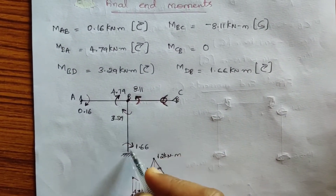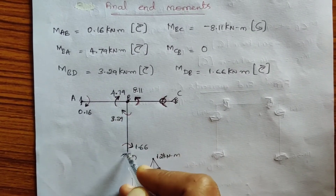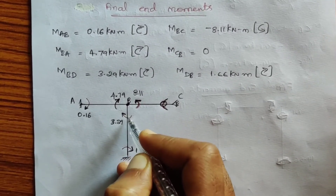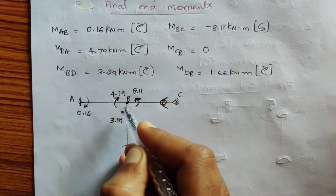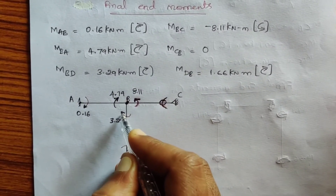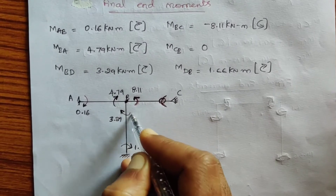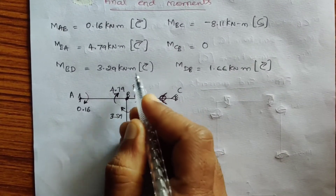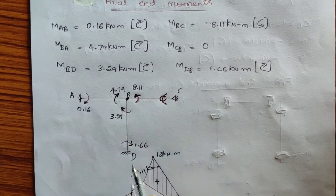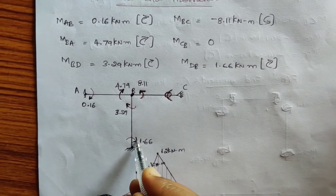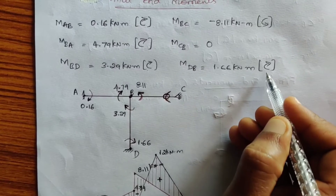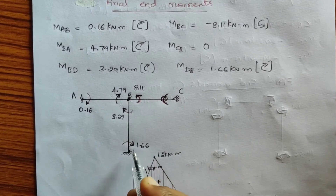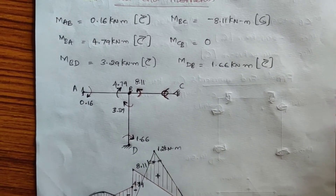For the BD span, we are at B looking towards D. The arc is marked above this element. For MBD, which is clockwise, the arrow mark must be placed to give a clockwise moment about B — marking on the other side would give anti-clockwise, so we mark it correctly for clockwise. For MDB = 1.66 kN·m at point D, to get the correct clockwise nature about D, the arrow mark is placed on the appropriate side.